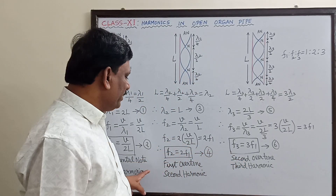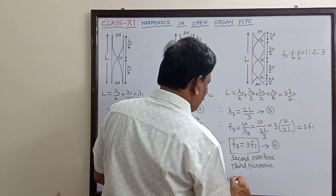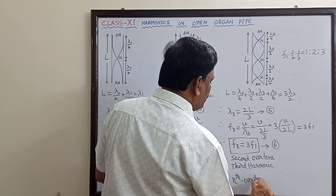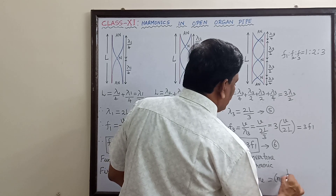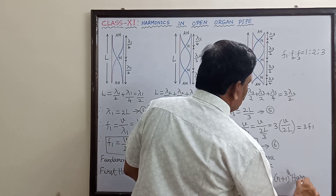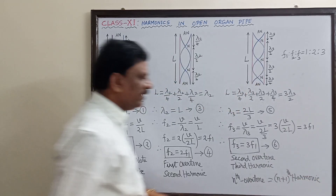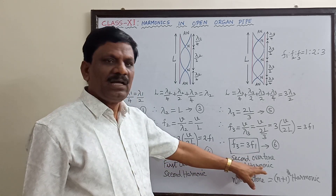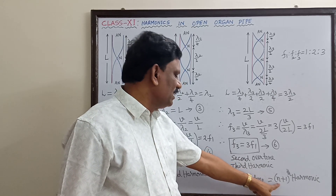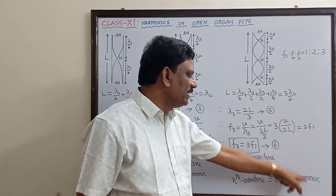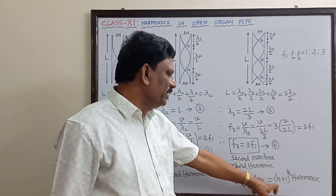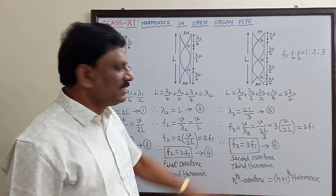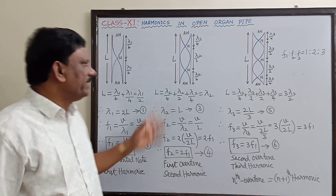The relationship between overtone and harmonic: the nth overtone is equal to the (n+1)th harmonic. For example, the first overtone is the second harmonic (n=1: 1+1=2), and the second overtone is the third harmonic (n=2: 2+1=3). This is the relationship between harmonics and overtones.